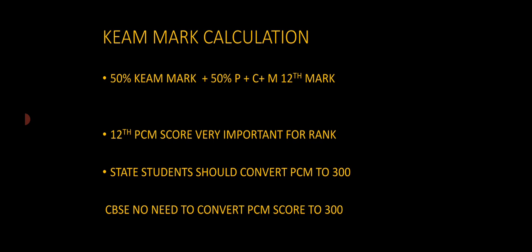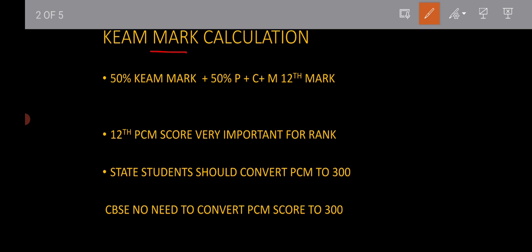So, let's start this video. First, I will tell you Kim's rank calculation. If you have a 50 mark, for example, any student — there are 100 marks. This 100 mark, divide by 960, multiply by 300.